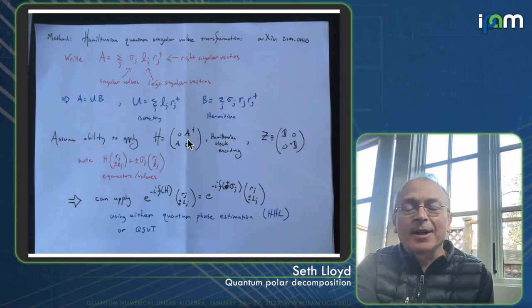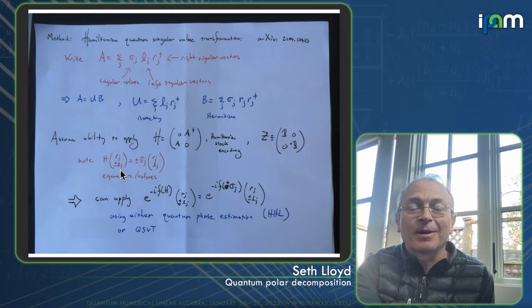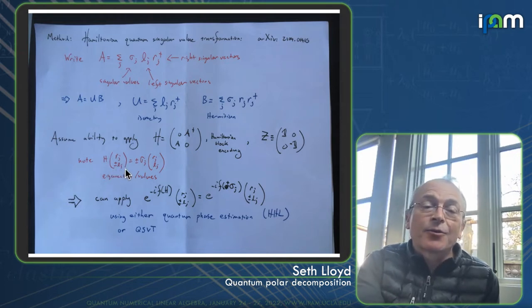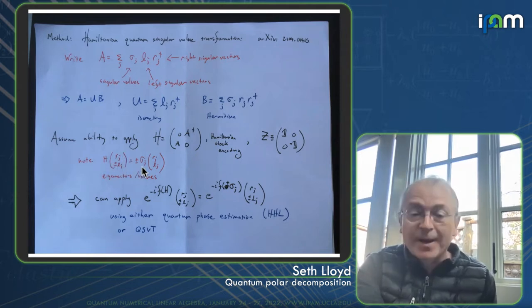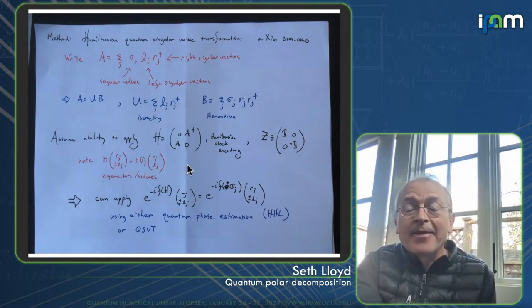And if I apply it to a vector, which is Rj plus or minus Lj, so Rj live in the upper part, the right, then the left-hand singular vectors live in the lower part. Then it's very straightforward to verify that the vectors of this form are eigenvectors of H with eigenvalues plus or minus sigma j.